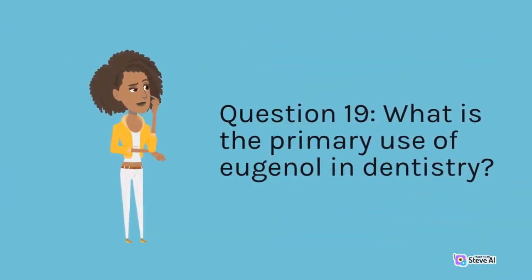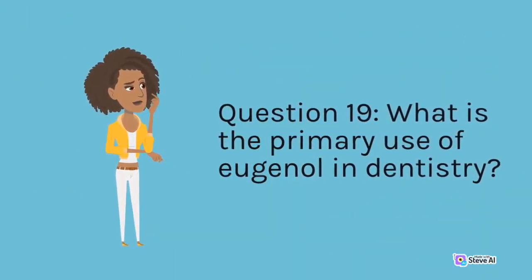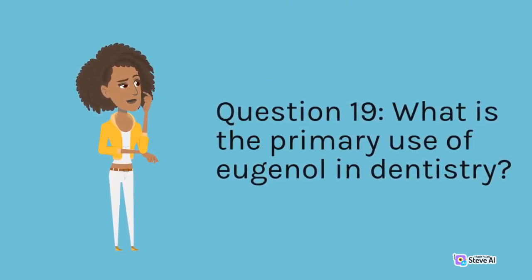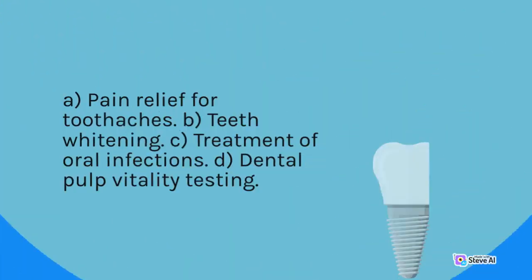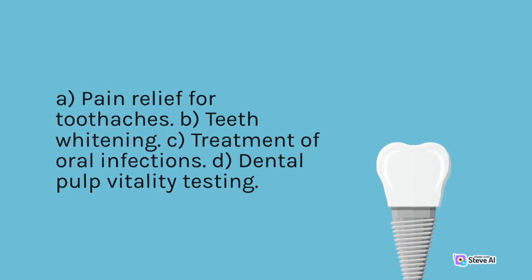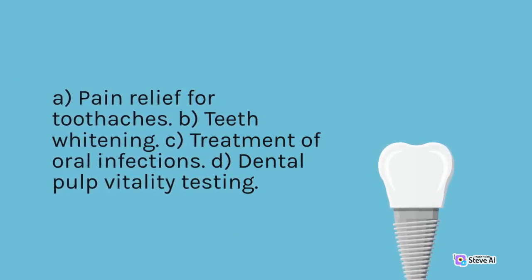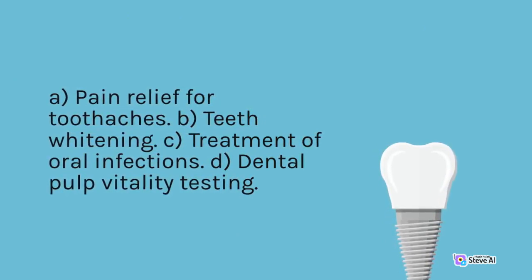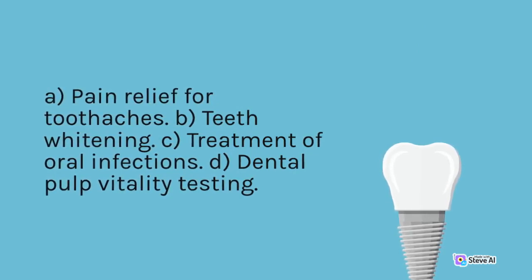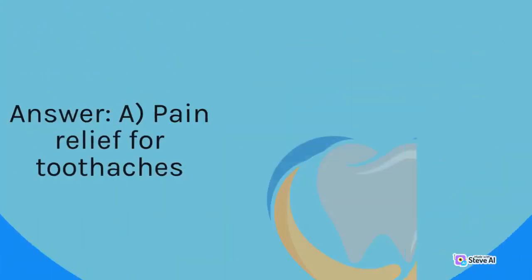Question 19. What is the primary use of eugenol in dentistry? A. Pain relief for toothaches. B. Teeth whitening. C. Treatment of oral infections. D. Dental pulp vitality testing. Answer: A. Pain relief for toothaches.